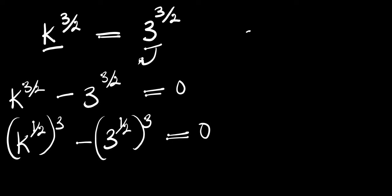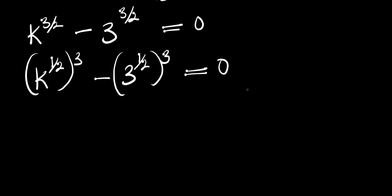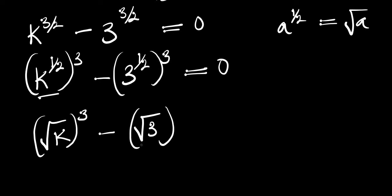Remember that a to the power n, all to the power m, equals a to the power n times m. Also remember that a to the power 1/2 equals the square root of a. Using that identity, this gives us the square root of k, raised to the power 3, minus the square root of 3, raised to the power 3, equals 0.